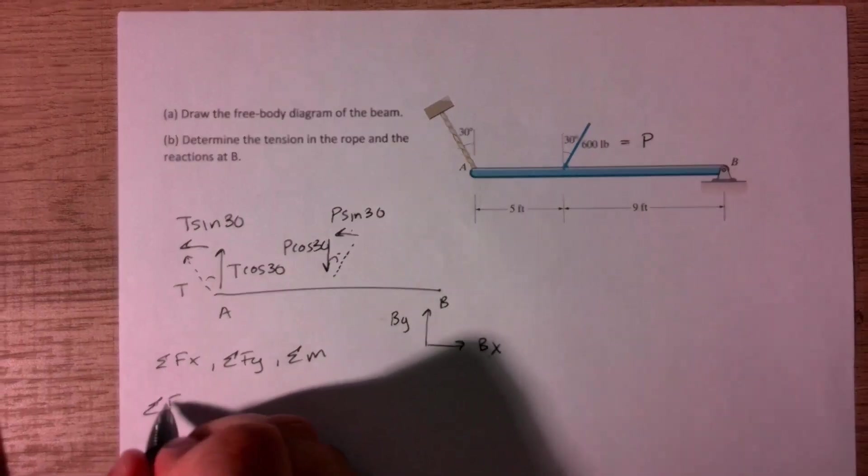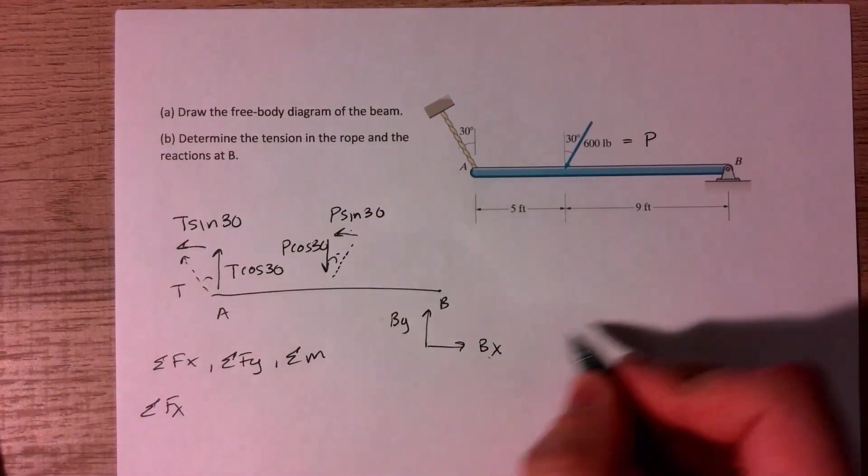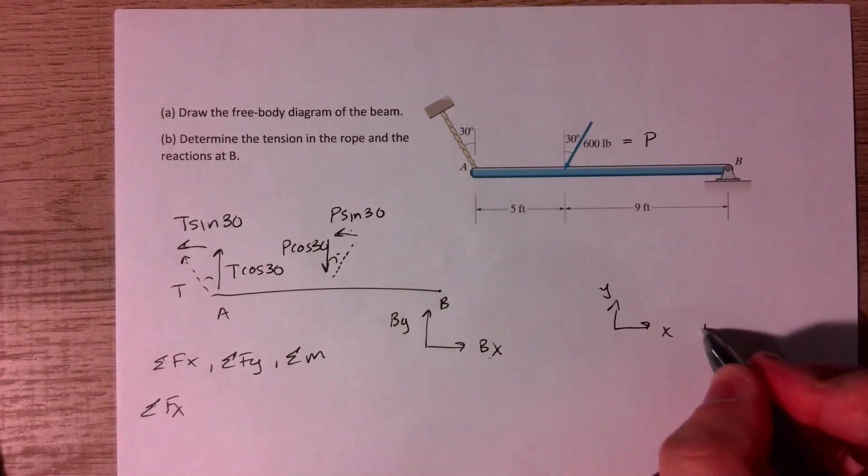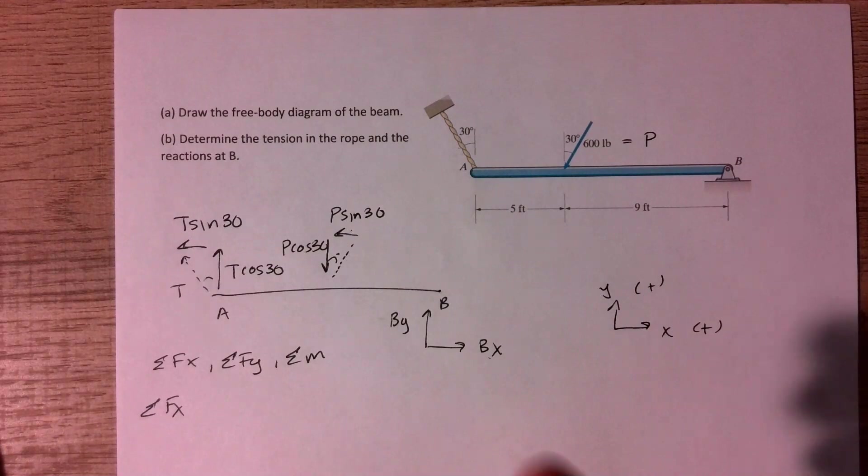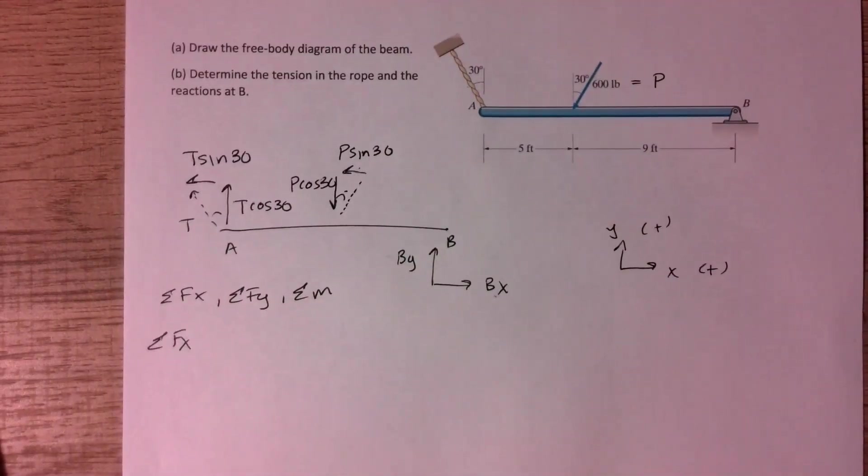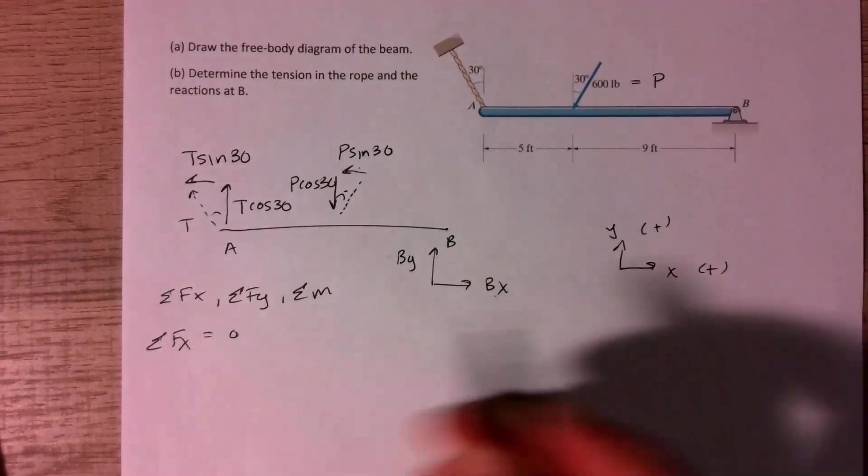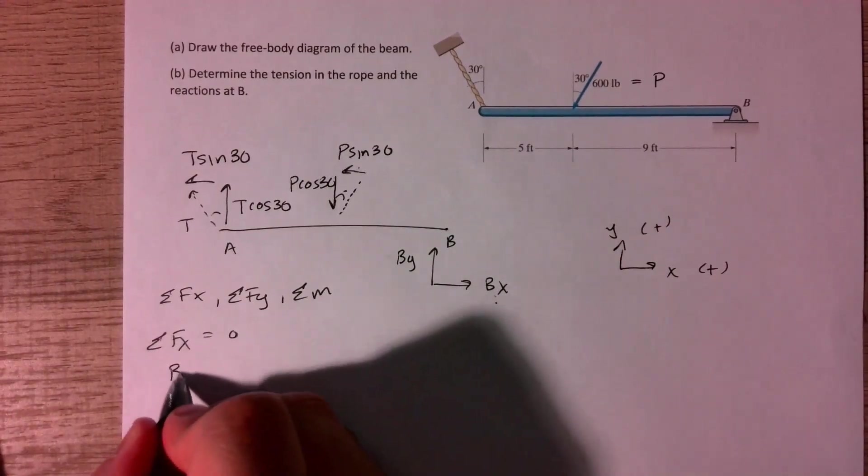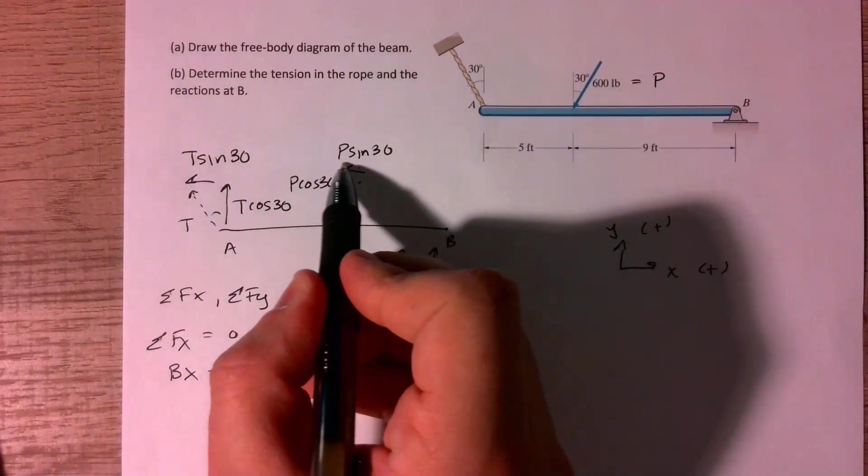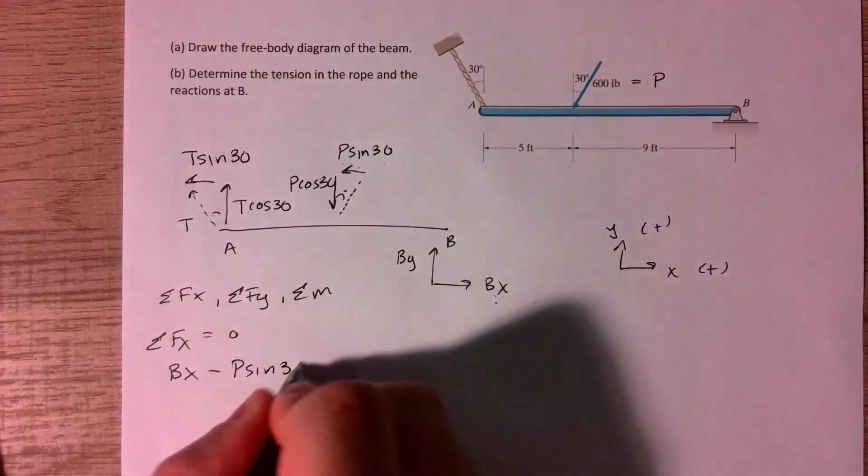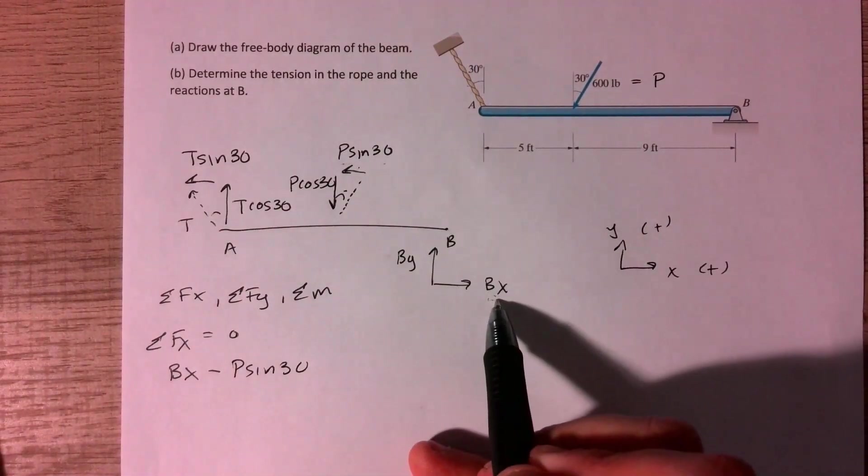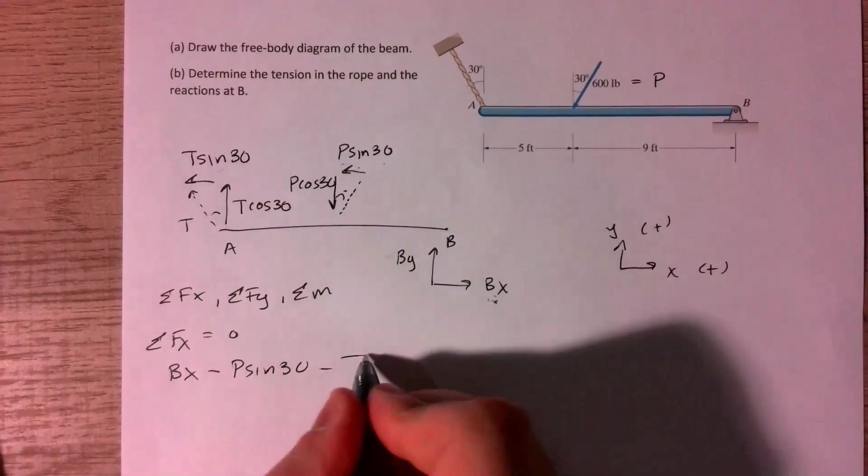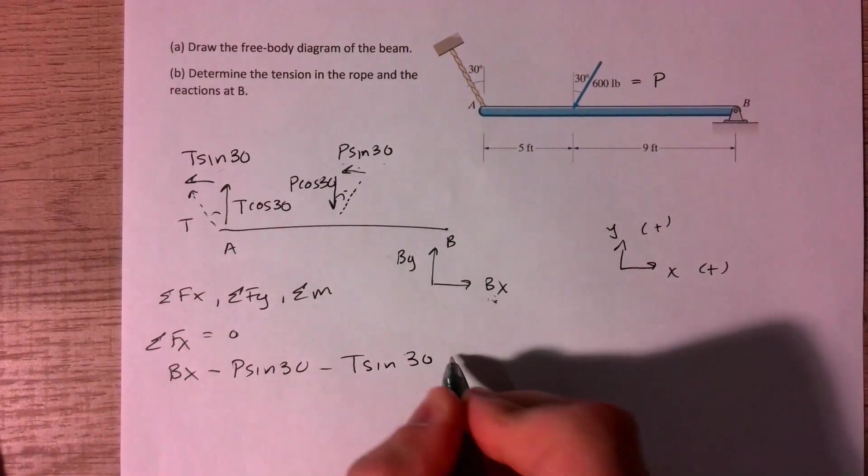So the first thing we're going to do is sum our forces in the x direction. And so we have this little axis here, so I'm just going to draw it out. We'll have these directions be positive. It's just for convention's sake, it doesn't really make a difference. So we'll set that equal to zero. So our Bx reaction force here is positive. So we have Bx minus this force here, T sine 30, because that's going in the opposite direction of Bx. And then same thing with this force here. And we'll set that equal to zero.